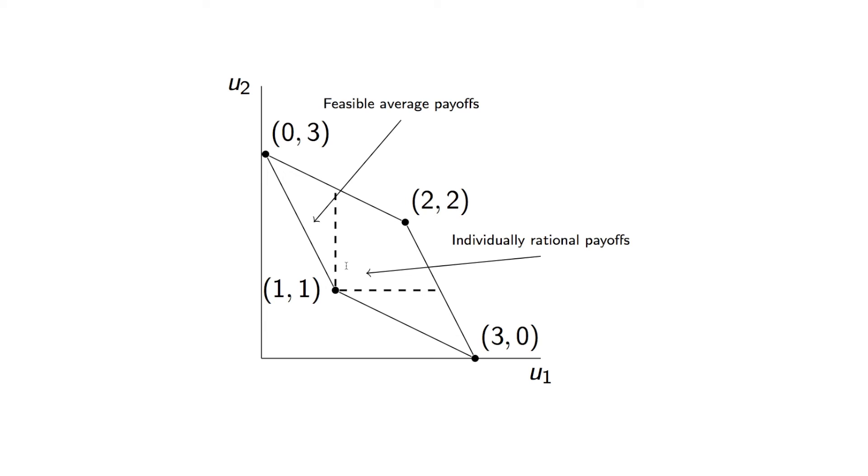And this region is called the individually rational payoffs. So this is a region of payoffs that gives a better utility to both players than the stage Nash.